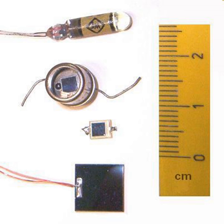Photodiodes are used as position sensors, for example as part of an angle sensor. One advantage of photodiode arrays is that they allow for high-speed parallel readout, since the driving electronics may not be built in like a traditional CMOS or CCD sensor.